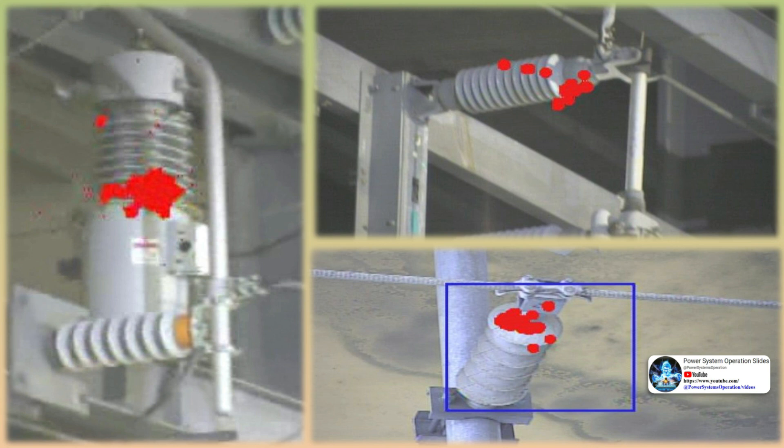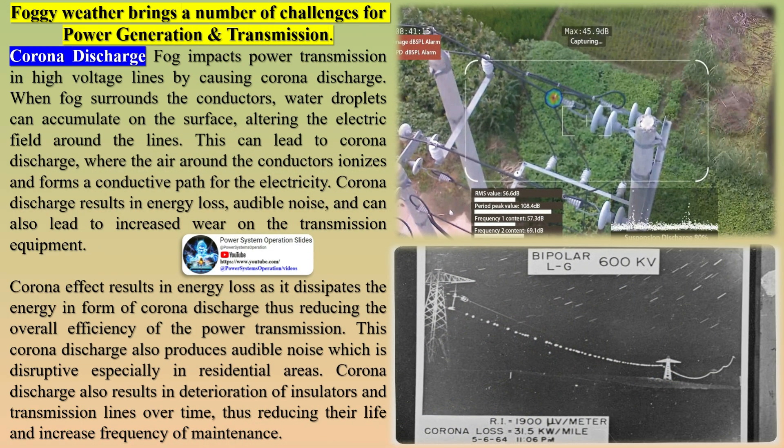Energy dissipation: the ionized air particles collide with neutral air molecules, transferring some of their kinetic energy to the neutral molecules. This transfer of energy results in the dissipation of power, known as corona loss or corona discharge loss. Factors affecting corona losses include conductor size and surface condition — smaller conductors or conductors with irregular surfaces tend to have higher electric field gradients, leading to increased corona losses. Higher transmission voltages generally result in higher corona losses, as electric field strength is proportional to voltage. Weather conditions such as humidity, air pressure, and precipitation can also affect the ionization of the air and the magnitude of corona losses.